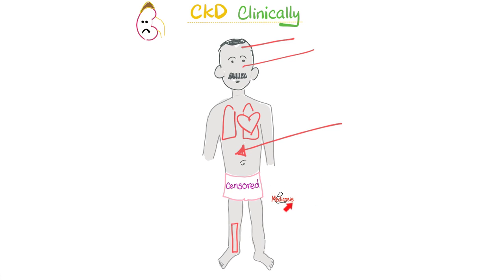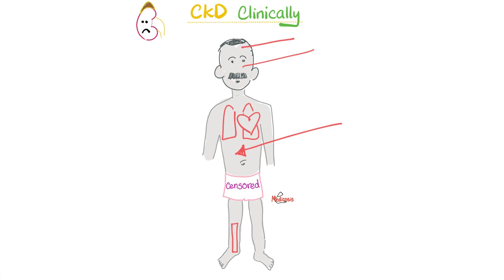In the next video, we'll talk about osteitis fibrosa cystica, the diagnosis and management of chronic kidney disease, and compare acute renal failure and chronic renal failure. After that, we'll cover tubular interstitial nephritis, acute interstitial nephritis, pyelonephritis (acute and chronic), nephrosclerosis, renal infarction, renal papillary necrosis, and renal cell carcinoma.